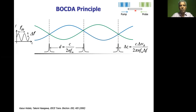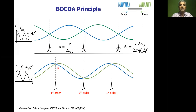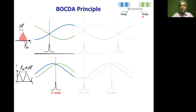This allows you to pick up changes in strain at a particular point. You design the modulation frequency such that only one of those peaks exists within the sensing fiber. If you want to change the position of the peak, you go to a slightly different modulation frequency. The zeroth-order position doesn't change, but the first-order and higher-order positions change as a function of the modulation frequency. By choosing one of these orders, you can localize the interaction at different positions and figure out the strain or temperature changes there.